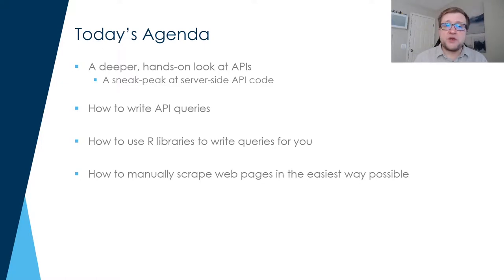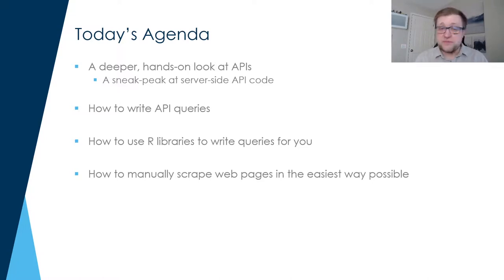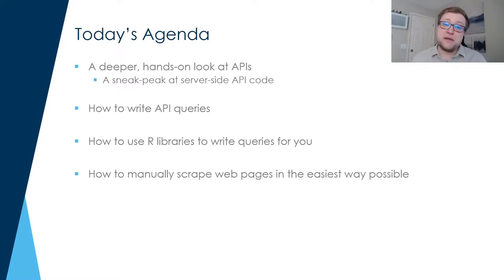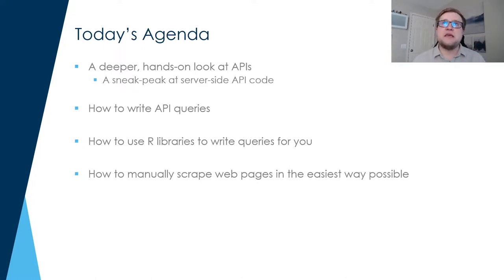We're going to cover four basic ideas. First, we'll talk about what APIs are and how they work, and why you care about them — believe me, you do if you want to create web-based data sets. Second, how do you actually craft an API query? Third, how do you use libraries to do this for you so you don't have to do too much difficult coding? And finally, if there is no API, how do we actually do web scraping to grab raw data from web pages and convert them into structured data sets in R?